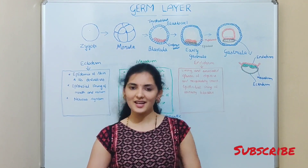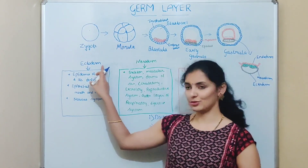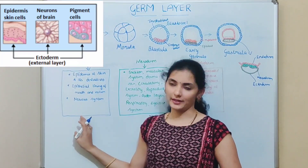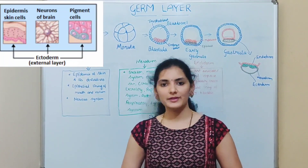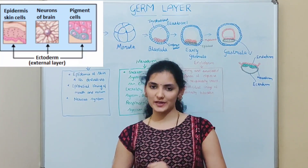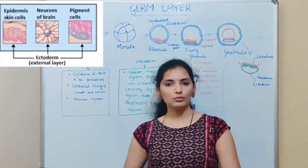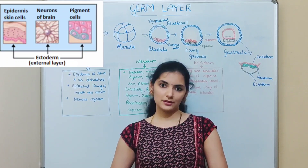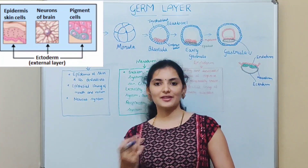Now we'll look at the derivatives of these three germ layers. The first is ectoderm, the outermost layer. It mainly forms outer components of the body like the epidermis of the skin and its derivatives such as hair, nails, and glands like sebaceous glands, mammary glands, and sweat glands. It also forms the epithelial lining of the mouth and rectum, the lens and cornea of the eye, enamel of the tooth, and the nervous system comprising both the peripheral and central nervous system.